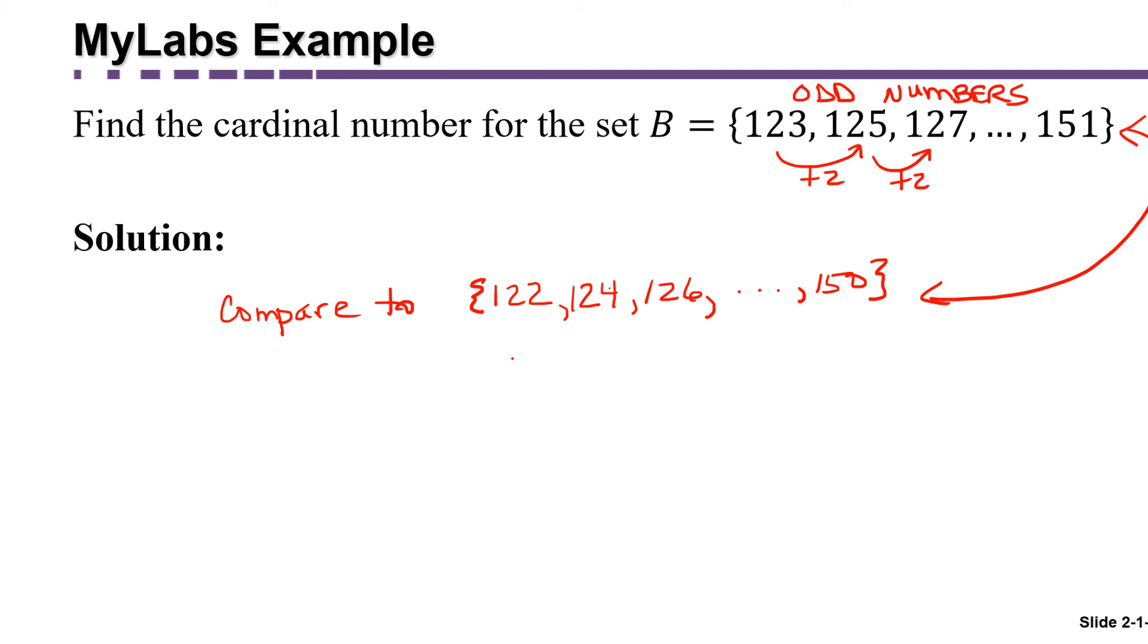So how did we on the previous slide find the cardinality of a set of even numbers like this? Well, what we did is we divided each number by two to get a list that didn't skip count. The problem is this still skip counts by two, but we can easily fix that. We're going to divide each element by two, which is going to give us not the same set, but a set with the same number of elements that doesn't skip count by two. So that gives us the set 61, 62, 63, all the way up to 75.